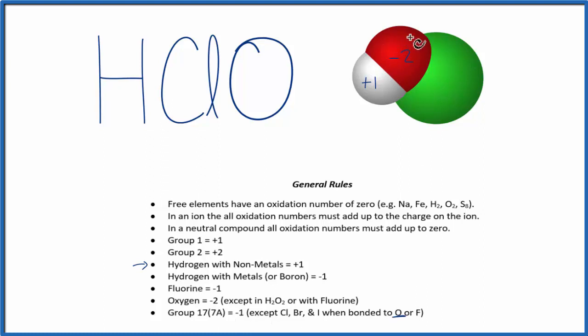that if we have a neutral compound, this is neutral because there's no charge up here, all the oxidation numbers, they add up to zero. So we use this information here, and this rule, to figure out the oxidation number on the chlorine.